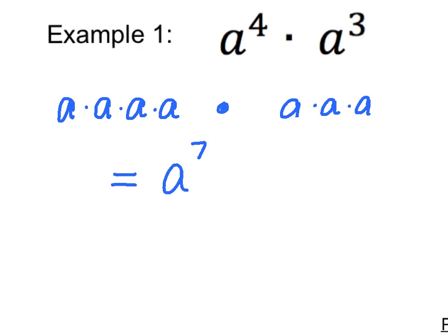In our product of powers rule, we wrote down that we should, if we have the same base number, which we do, our base is a for both terms, we will add the exponents.